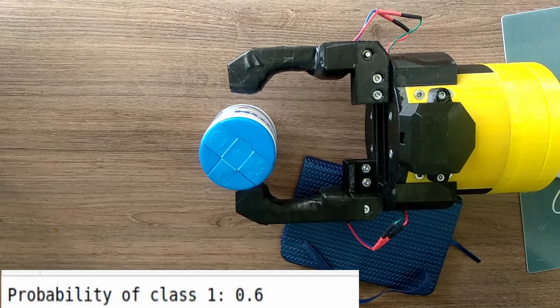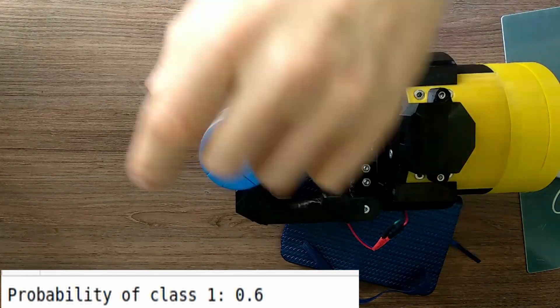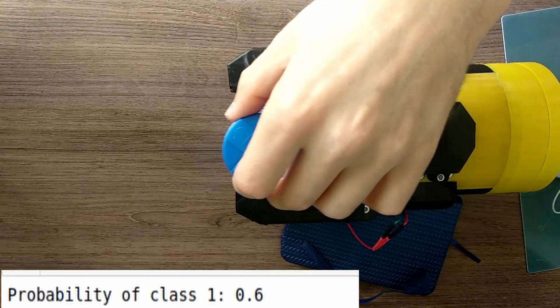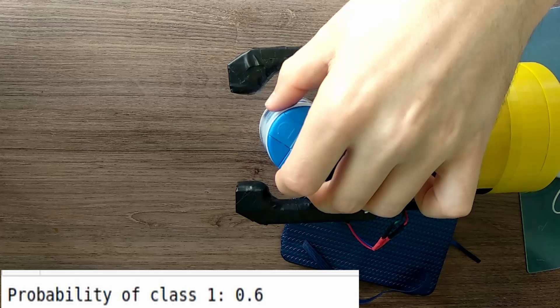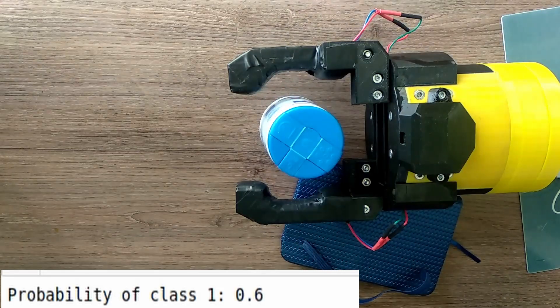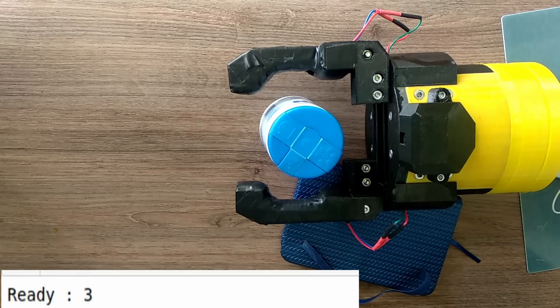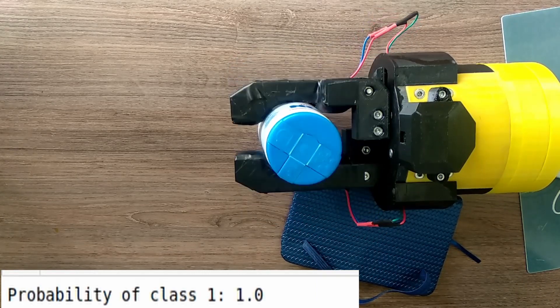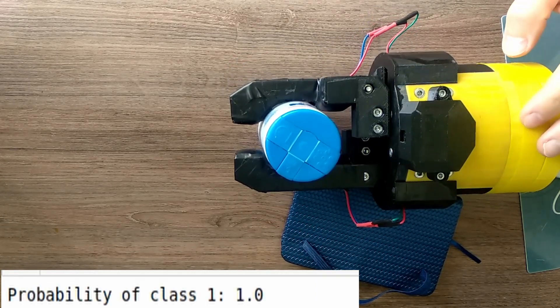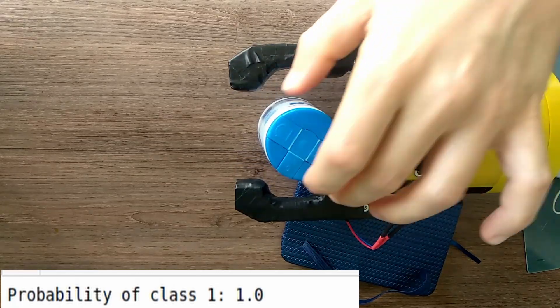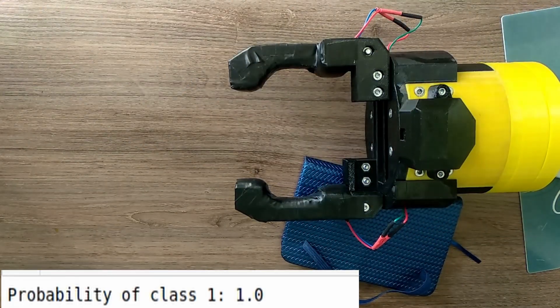Well, this is false negative, but as you can see the probability is still greater than 0.5. Now the classifier is pretty sure that there is something between the jaws of the gripper.